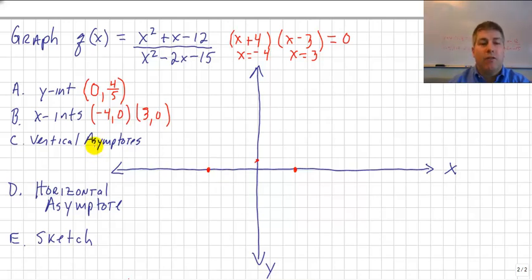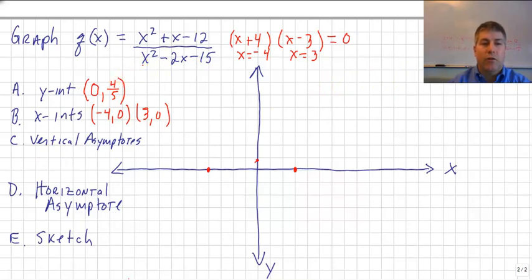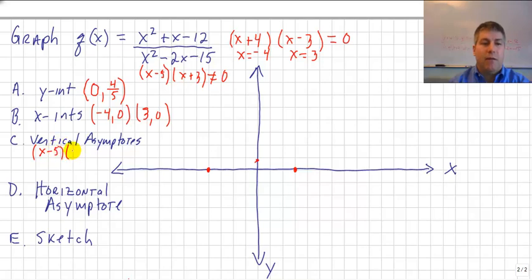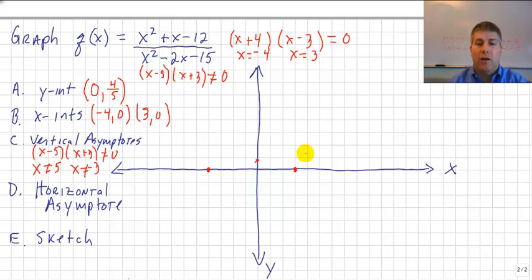Third, let's find our vertical asymptotes. The vertical asymptotes are where our function is undefined — those are our domain restrictions. We work with the denominator. x squared minus 2x minus 15 factors to (x − 5)(x + 3), and that must not equal 0. So x cannot equal 5 and x cannot equal negative 3 — those are the locations of our vertical asymptotes.